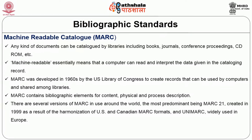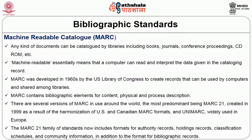MARC 21 was created as a result of the harmonization of the US and Canadian MARC formats and UNIMARC, which was widely used in Europe. They took the best of both and created MARC 21. The family of standards includes formats for authority records, holding records, classification schedules, and communication, in addition to the bibliographic format. An authority record ensures a place name like 'New Delhi' is entered consistently — MARC 21 takes care of this standardization.